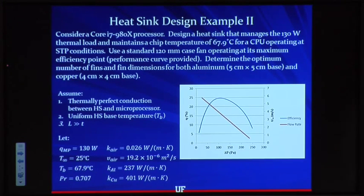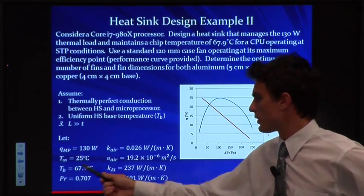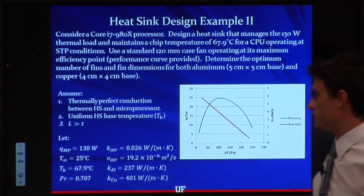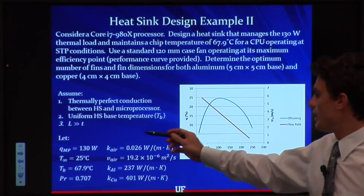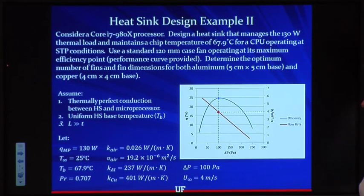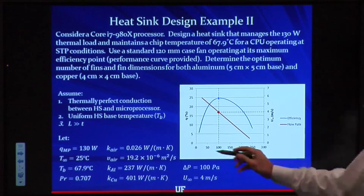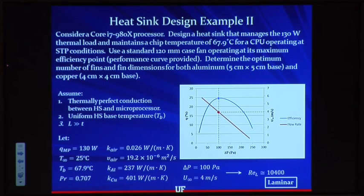Our initial conditions: heat to dissipate is 130 watts, free stream at 25°C, base temperature at 67.9°C. We know the Prandtl number, the conductivities of our materials, and the thermal properties of the working fluid — air. The fan efficiency curve gives an optimum delta-P of around 100 pascals, which correlates to a free-stream velocity u-infinity of 4 meters per second. Calculating the Reynolds number gives about 10,000, which is laminar for external flow.